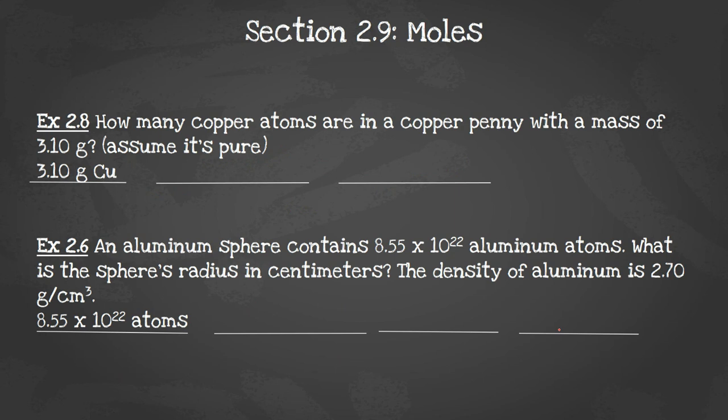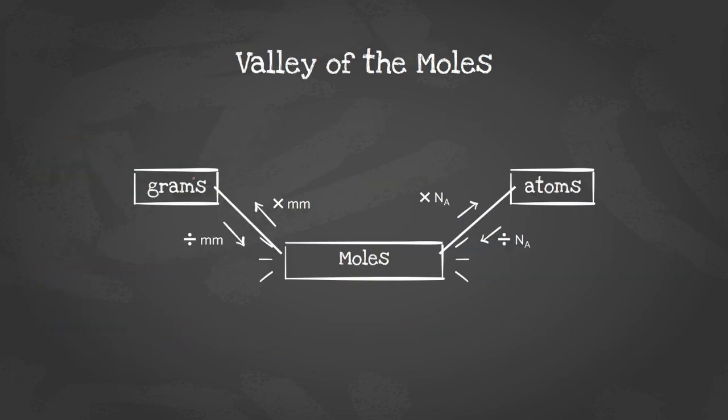How many copper atoms are in a copper penny with a mass of 3.1 grams? Assume that it's pure. We're going to start with our given, which is already on here for us. We have that many grams of copper over 1, and we are going to have two steps because it wants to know how many atoms and it gave us grams. If we go back to our Valley of the Moles, there is no bridge that goes from grams to atoms. You have to go down into the valley and then back up the other side. There's no way around it, so it's two steps.